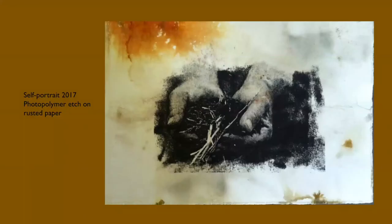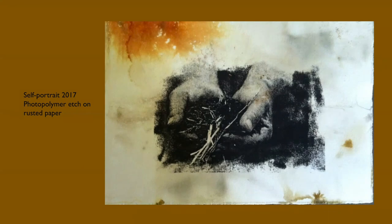This one — Self Portrait 2017 — is a photo polymer print, which is an etching print process we will do in spring 2021, and it is on rusted paper. You can do all kinds of photo transfers and things, but it's really about creating a background first and then printing on top of it. The way that activates the paper can be really incredible, and it can be used contextually if you're looking at a specific place or a specific community. There are ways to combine these things conceptually.